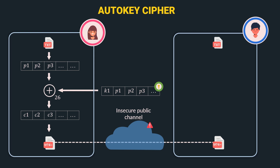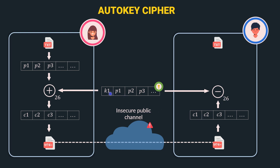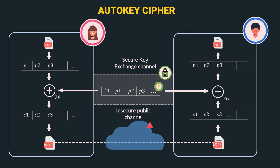Bob has the ciphertext. For decrypting, Bob represents the ciphertext as a stream of characters c1, c2, c3, and so on. Bob takes the ciphertext stream and the key stream and gives it to a bitwise negation operation limited by mod 26. It takes c1, subtracts k1, and applies mod 26 — that is c1 − k1 mod 26 — similarly c2 − p1 mod 26, and so on. This generates the plain text stream p1, p2, p3, where p1 = c1 − k1 mod 26 and p2 = c2 − p1 mod 26. Bob has successfully decrypted the ciphertext. The key stream is shared using a secure key exchange channel.